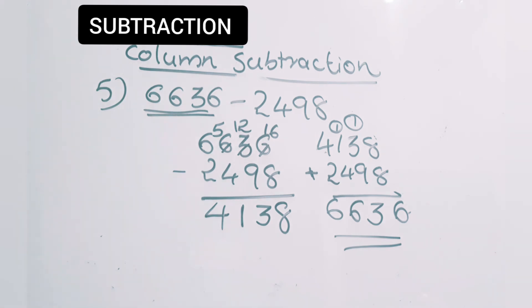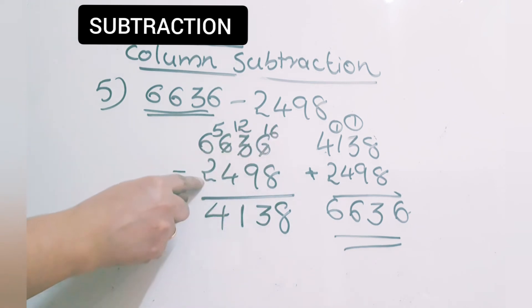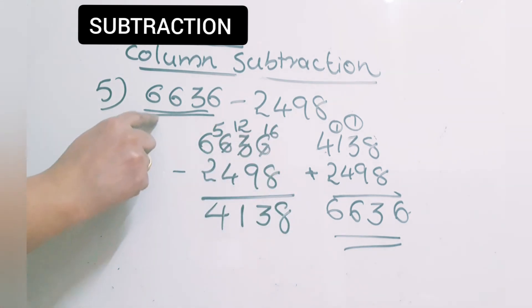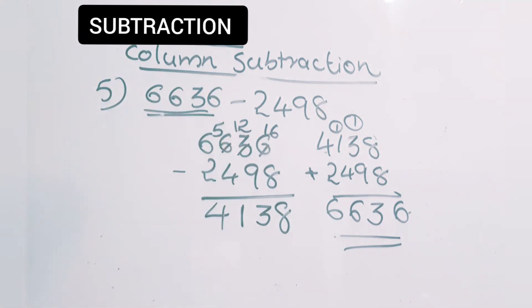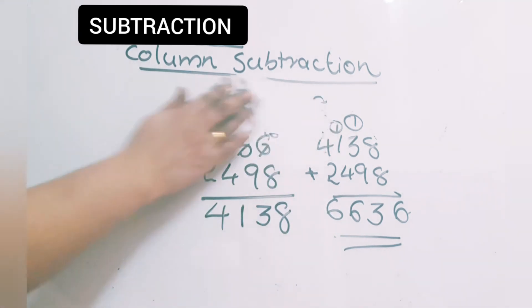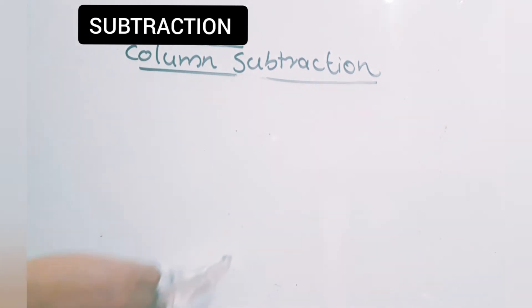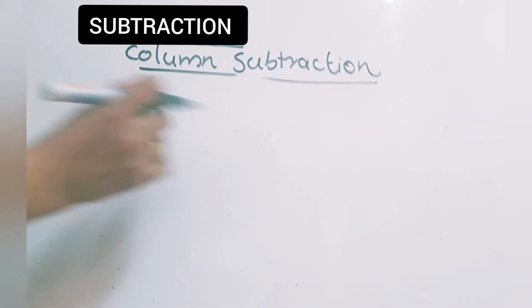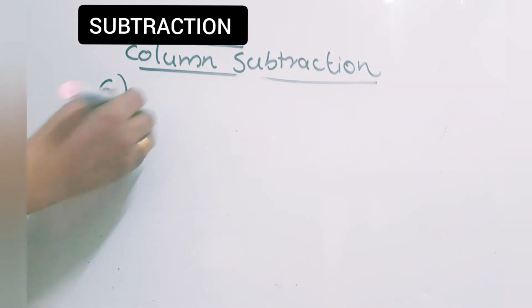Sorry for the lag in between. So: the difference plus the second number — write both and add them. Then check whether you got the first number. If both are matching, our subtraction is correct.